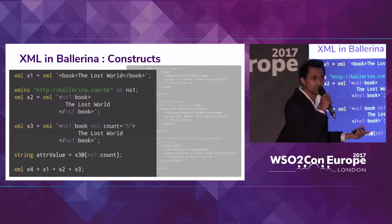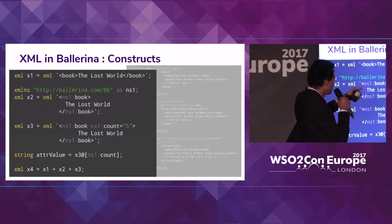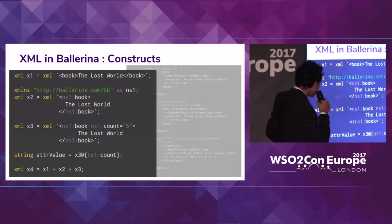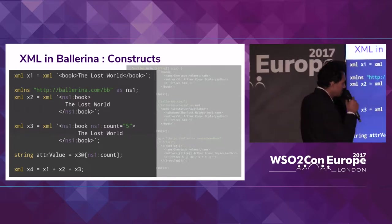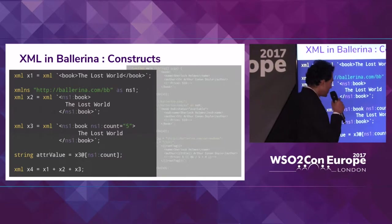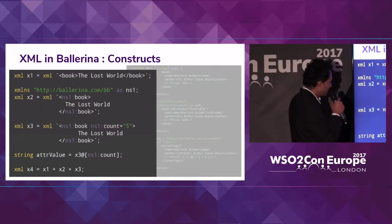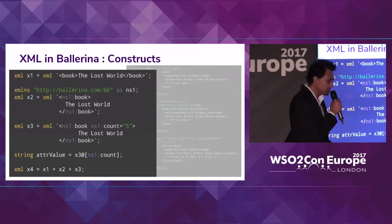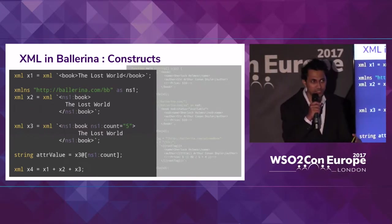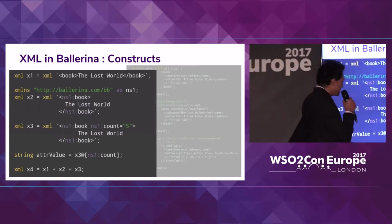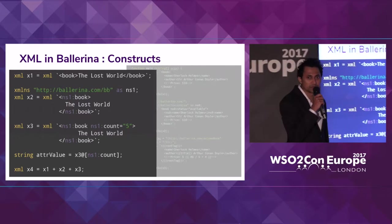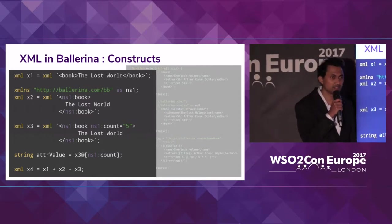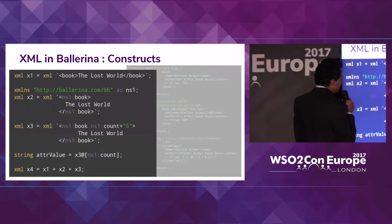Let's say you haven't defined this namespace. In that case, if you try to use 'ns1', there will be a compilation error. If you look at the third example, you can see that I have introduced an attribute. So if you want to access this attribute, you have to use the '@' notation to say that you are interested in the attribute value, and then you can specify the fully qualified name. That's how you can specify namespaces in XML literals and access attribute values.